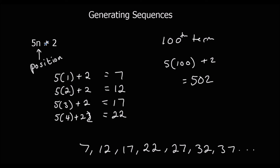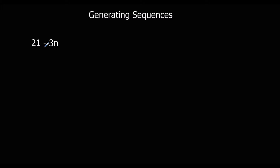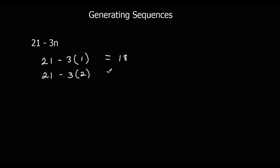So this is how we use a rule to generate a sequence. Here's another one: 21 minus 3n. In the same way, let's find the first 5 terms. The first term is 21 minus 3 times 1 — n is the position — so 21 minus 3 is 18. The second term is 21 minus 3 times 2, that's 21 minus 6, which is 15.